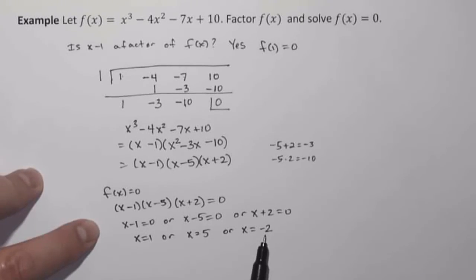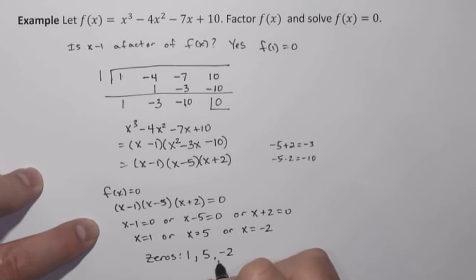And again, the real picture is that 1, 5, and negative 2 are the zeros of our original function. So we've actually found the zeros of our function. They're 1, 5, and negative 2. So that completes our example. But I do want to make one other point.